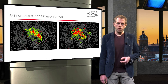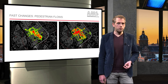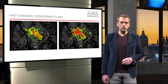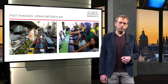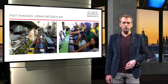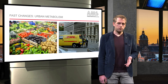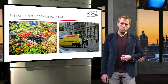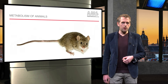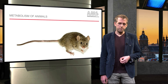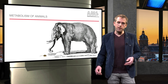Fast changes refer, for example, to pedestrian flows, as you can see here from two different starting points in the inner city of Delft. In red we see the most crowded areas. Fast changes also refer to other traffic modalities and urban metabolism, such as energy, information, nutrients, materials and goods. The metabolism of a city increases with its size. Please realize that with animals the opposite occurs — small animals, like mice, have a higher metabolism compared to big ones, like elephants.